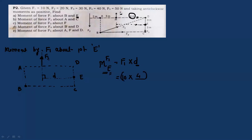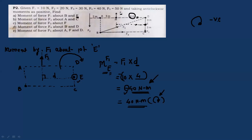Observing the sense of rotation: if you hold point E fixed and apply F1, it tries to rotate the rectangle in the clockwise direction about E. Clockwise is negative, so moment = −10 × 4 = −40 N·m. We can also write this as 40 N·m clockwise. Remember: in calculations, clockwise is negative and anticlockwise is positive.